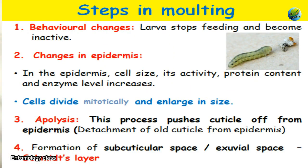This is the overall viewpoint of molting. Now let's see the step-by-step process of how molting takes place in insects. The first step, when the larva is ready to molt, is behavioral changes — it stops feeding and movement also stops. The second step is changes in the epidermis: the epidermis starts to produce protein content, and cell size, activity, and enzyme levels increase. This means the cells divide mitotically and increase in size.